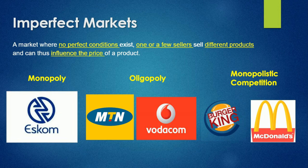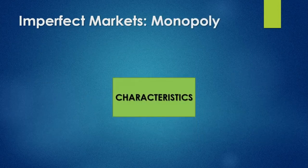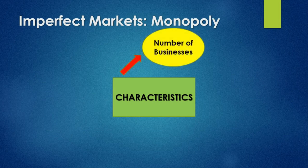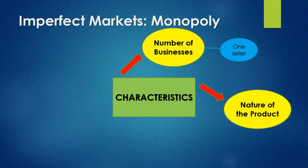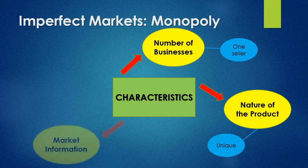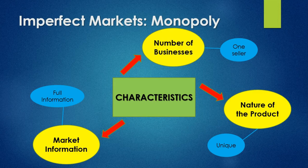We are now going to look at what makes up a monopoly — its characteristics. The number of businesses: we have one seller, one business dominating the market. The nature of the product: they sell a very unique product, one which has no close substitutes. Market information: in a monopoly there is full market information, meaning it is very clear what trends are occurring and what peaks are being seen.